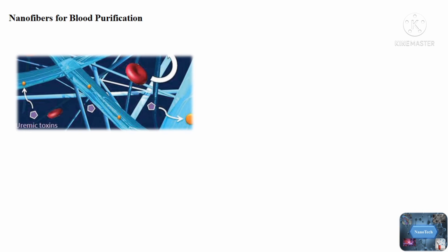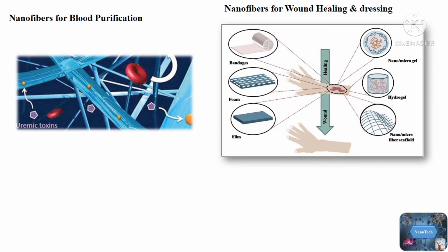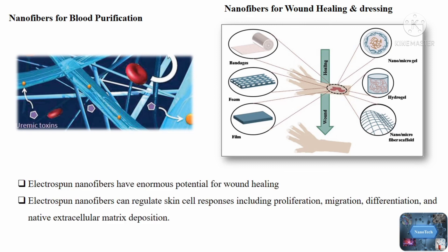Nanofibers for wound healing and wound dressing: electrospun nanofibers have enormous potential for wound healing. Electrospun nanofiber mats provide a structure similar to the native extracellular matrix with high interconnected porosity and great absorbance. The water absorbance capacity of nanofibers is greater than films fabricated from the same polymers. Balanced moisture and gas permeability provide an appropriate environment to protect the wound from exogenous infection, cell migration, proliferation, hemostasis, exudate absorption, and cell respiration.